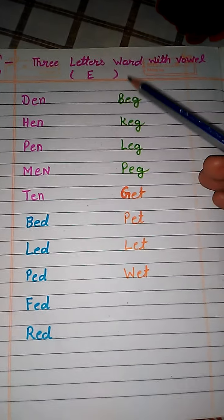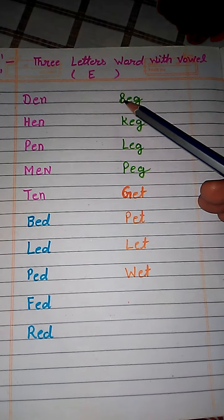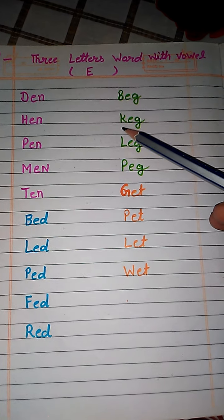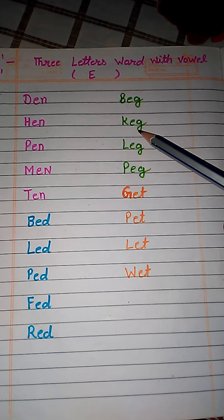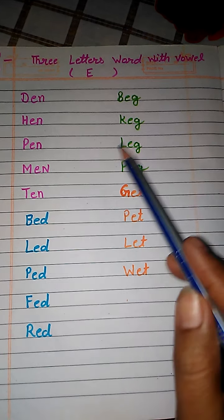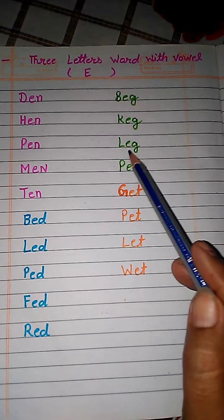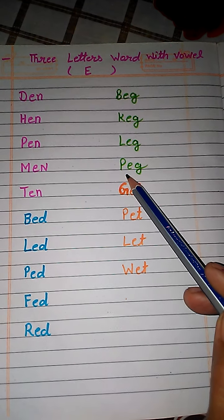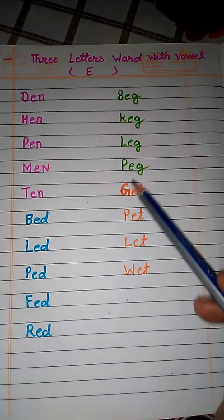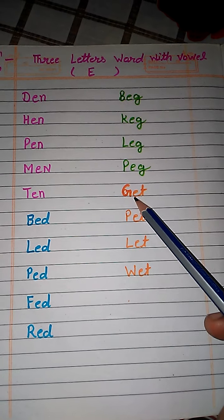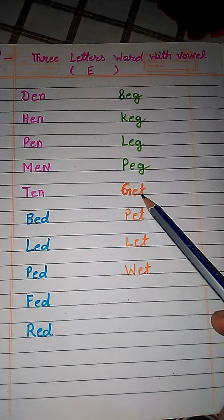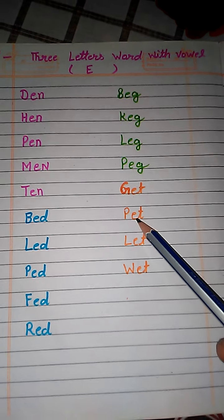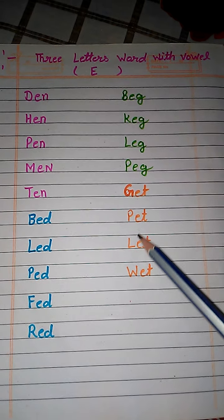Let's see some new words. B, E, G — beg. K, E, G — keg. L, E, G — leg. P, E, G — peg. G, E, T — get. P, E, T — pet.